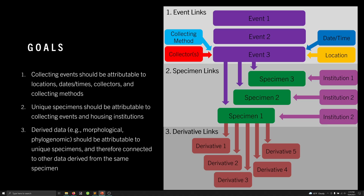There should be unique specimens that can be attributed to collecting events as well as other metadata. For example, housing institution might be one of those pieces of metadata, but you could have other characteristics of the specimen — like the owner institution might be different than the housing institution if it's on loan. So that should be able to be tracked.